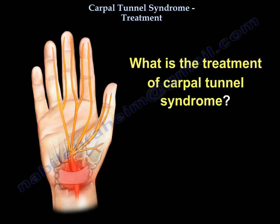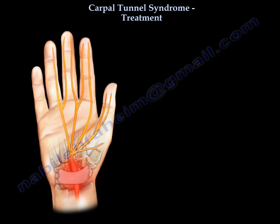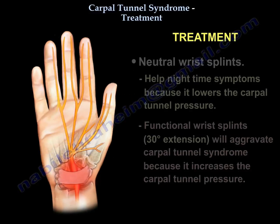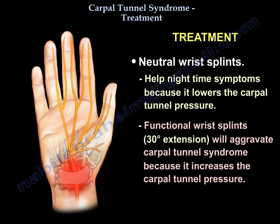What is the treatment of Carpal Tunnel Syndrome? The treatment is usually anti-inflammatory medication, activity modification, and avoiding activities that aggravate the symptoms. Then use neutral wrist splints. It will help the nighttime symptoms because it lowers the Carpal Tunnel pressure. Functional wrist splints, which is about 30-degree extension, aggravates the Carpal Tunnel Syndrome because it increases the Carpal Tunnel pressure.